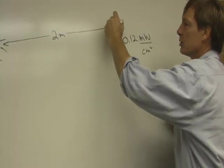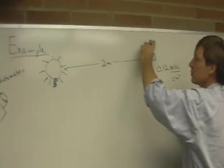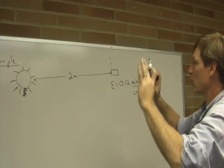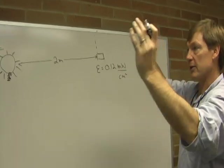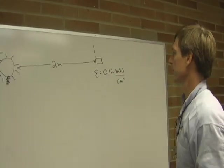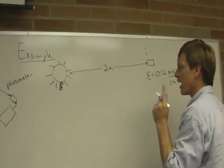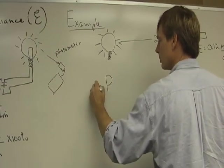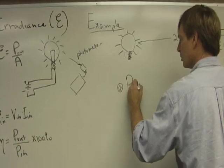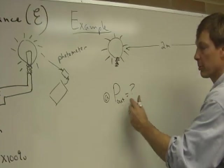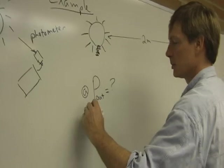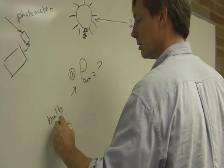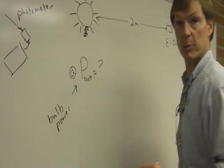And that would be true if it's uniform. That would be true if I looked at this anywhere two meters away, up above, down below, a sphere of two-meter radius. It's going to be the same all the way around. Now, I want to know first, what's the power of the bulb that it's putting out? Call that bulb power. Light power it's putting out.